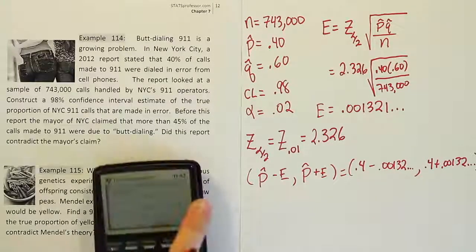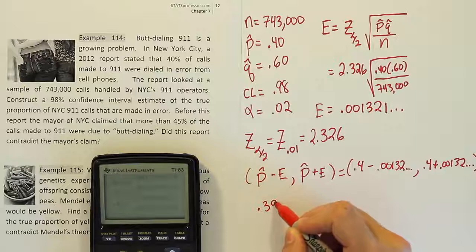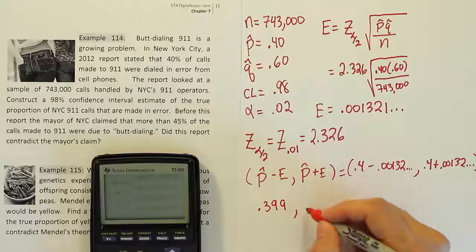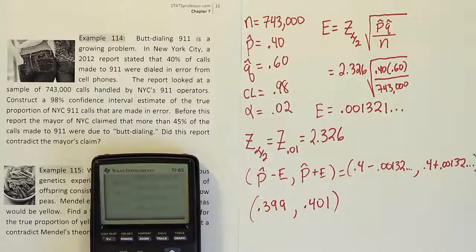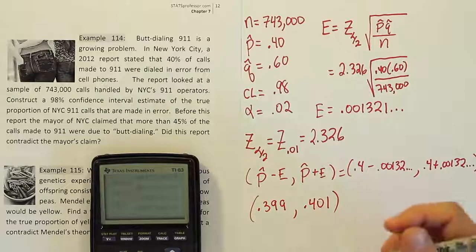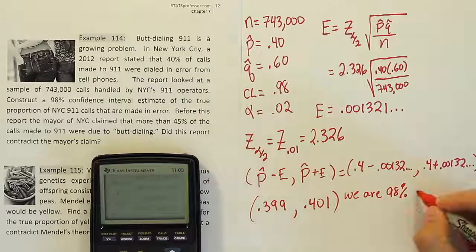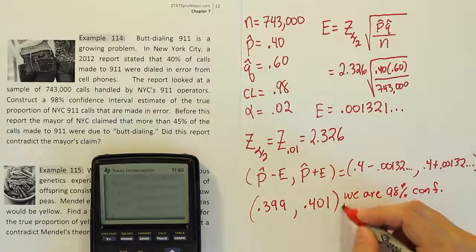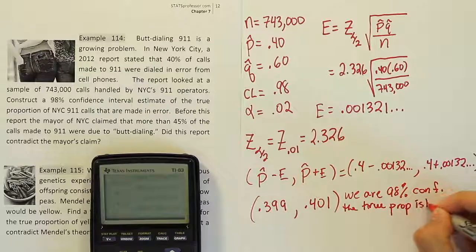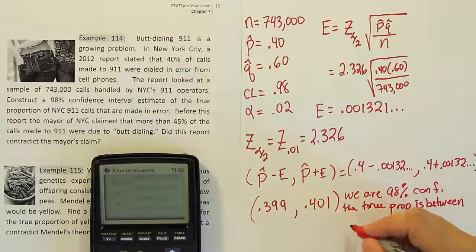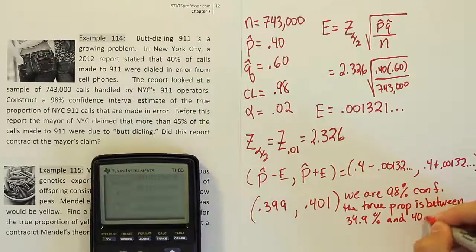So we'll do 0.4 minus the error and 0.4 plus the error. And when you're finished doing that, you'll end up with 0.399, let's say, up to 0.401. So rounding it to three places, that's the result we get. Alright, and remember what this says. It says we are 98% confident. So we are 98% confident.